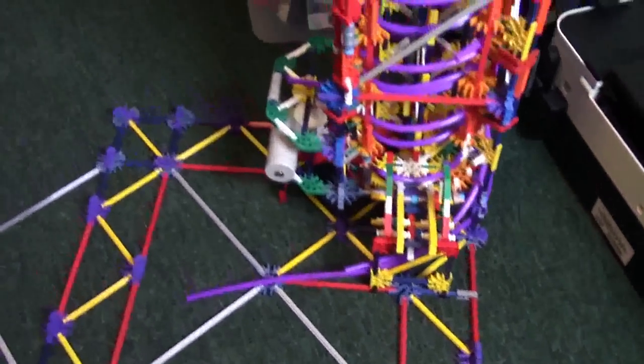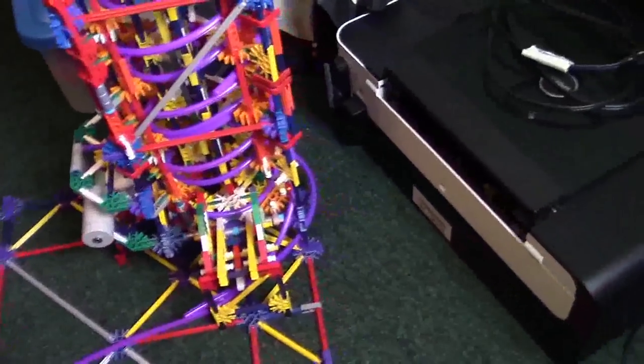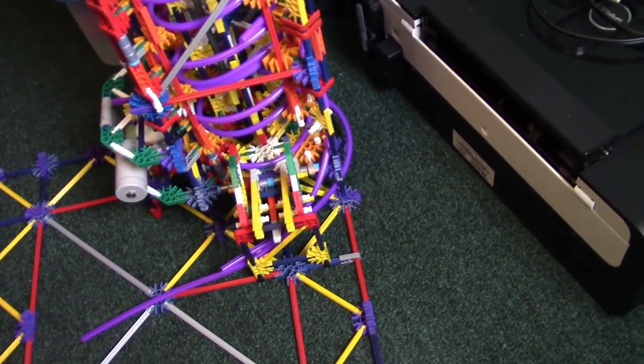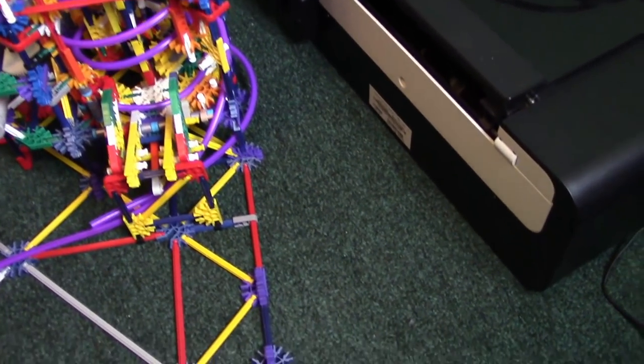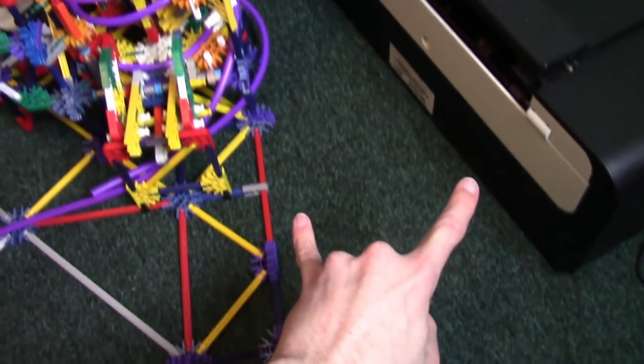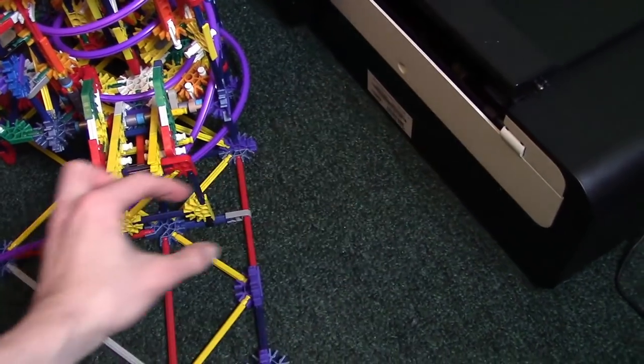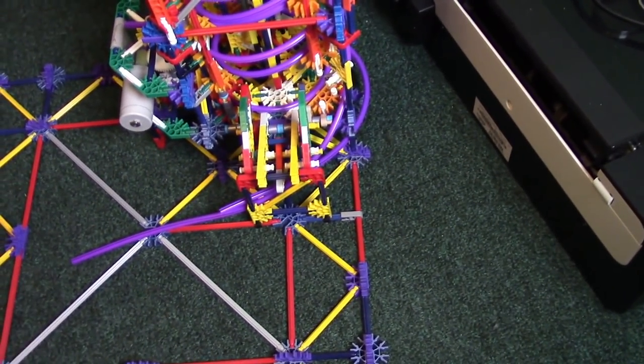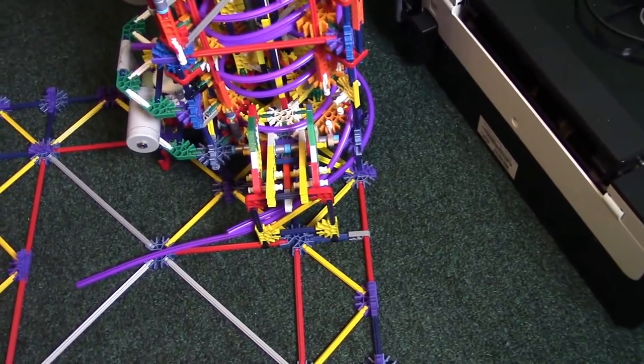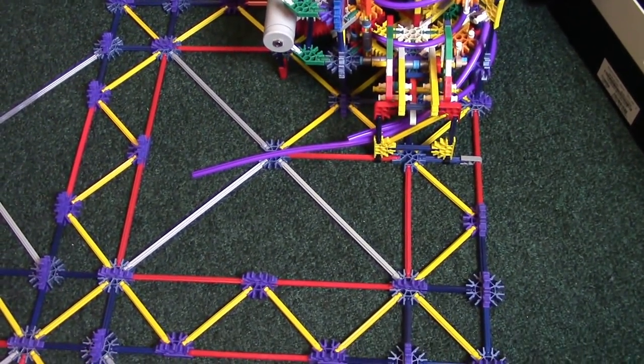So the plan is to have kind of a track about a red rod wide going all the way around this thing, and that's going to act as the floor, since I don't have enough white connectors. And that floor will come all the way to that loading track, so then it'll be nice because the balls won't be able to clog anywhere.